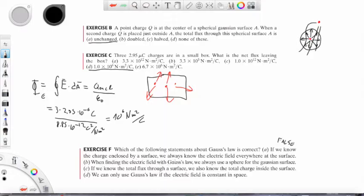B. When finding the electric field with Gauss's law, we always use a sphere for the Gaussian surface. Well, this is not true. So a sphere is great for single charges like this. For example, if we have a conductor that has a lot of, let's say, positive charges along.